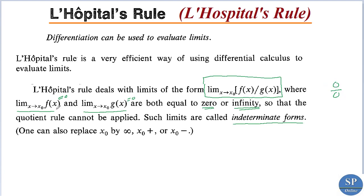Similarly, if the limit of f(x) is equal to infinity as x tends to x₀, and the limit of g(x) is equal to infinity as x approaches x₀ — that is, both limits are infinity — then we will have the limit of the form infinity/infinity. This is also an indeterminate form. Here, x₀ may be replaced by infinity, x₀⁺, or x₀⁻, etc.